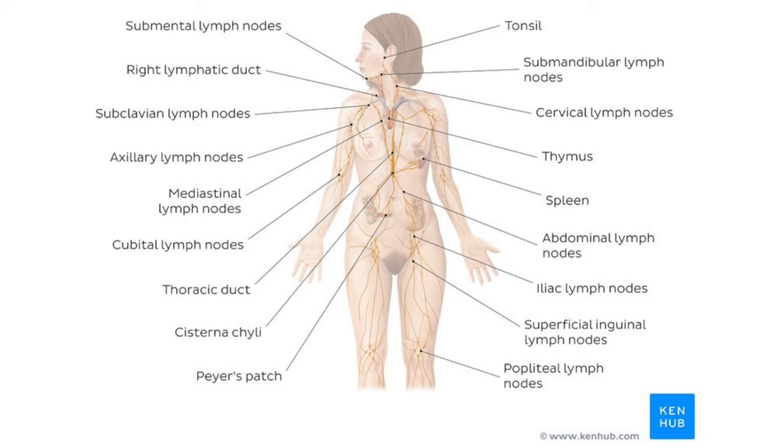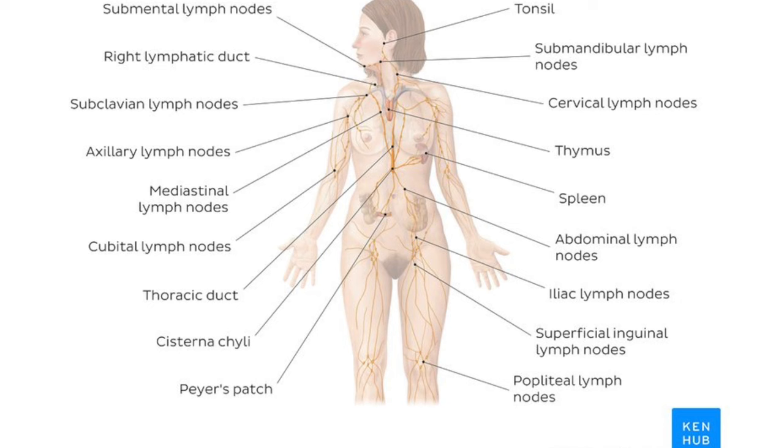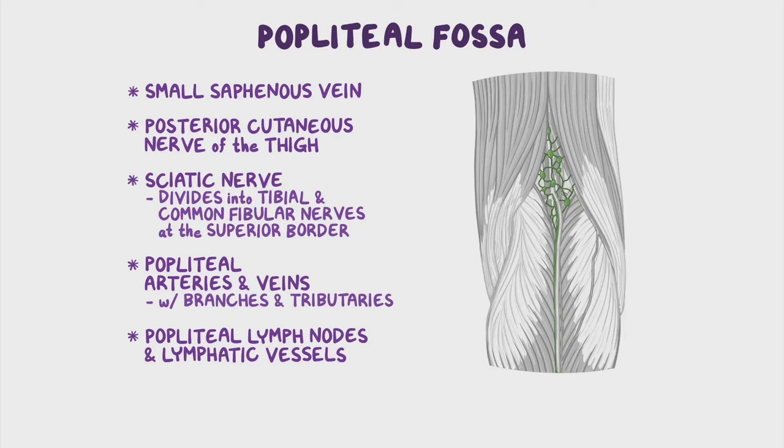The lymphatic system is a network of vessels, nodes, and ducts that circulates fluid through the connective tissue of the body. The popliteal lymph nodes include six or seven nodes and are located in the legs behind the knees in the popliteal fossa. They service the lower legs and the feet for the lymphatic system. This system is thrown out of balance after the knee has suffered some form of injury or surgery.